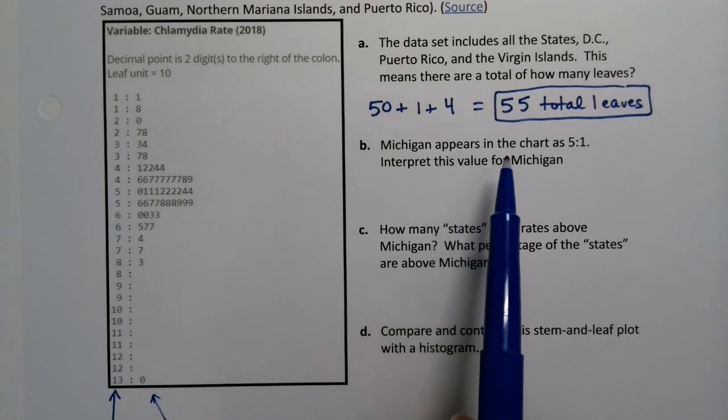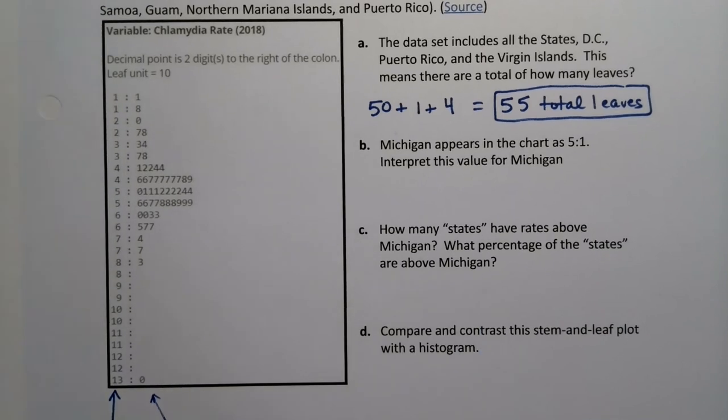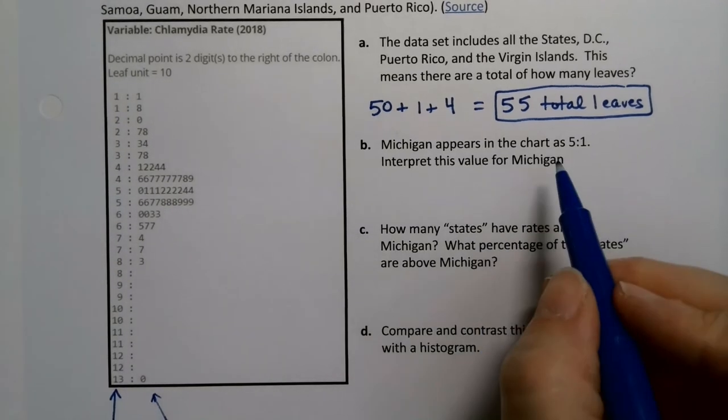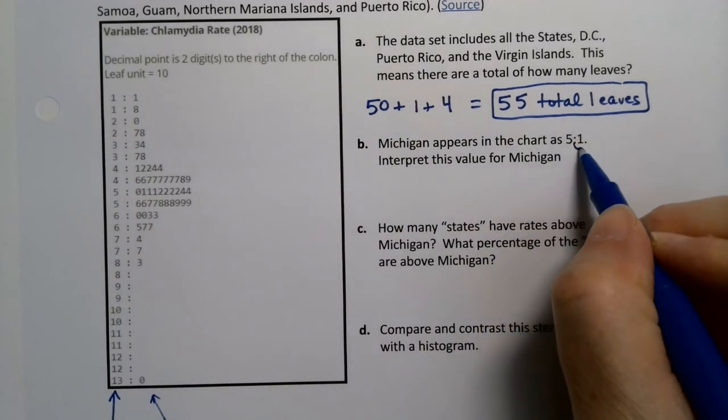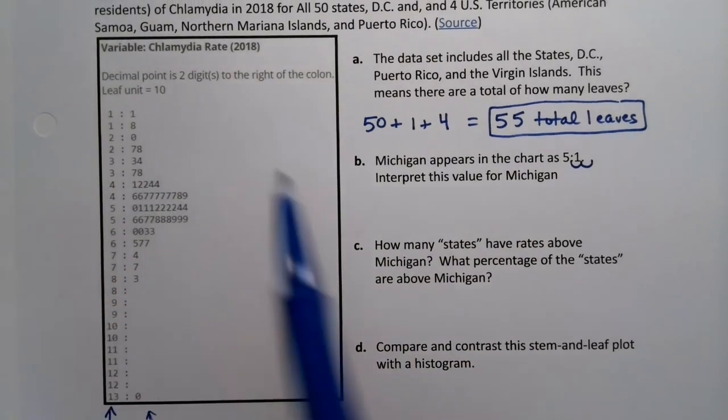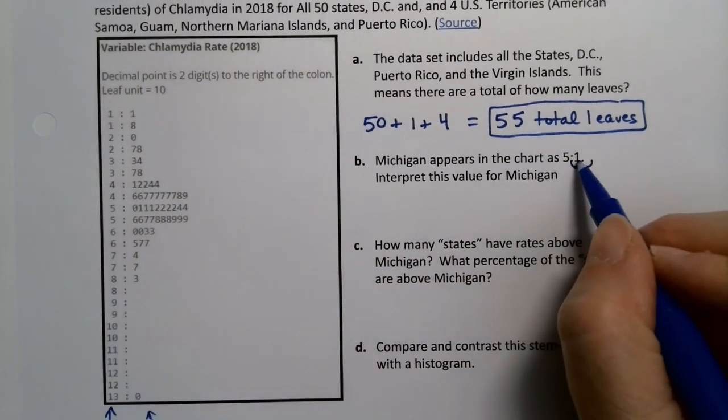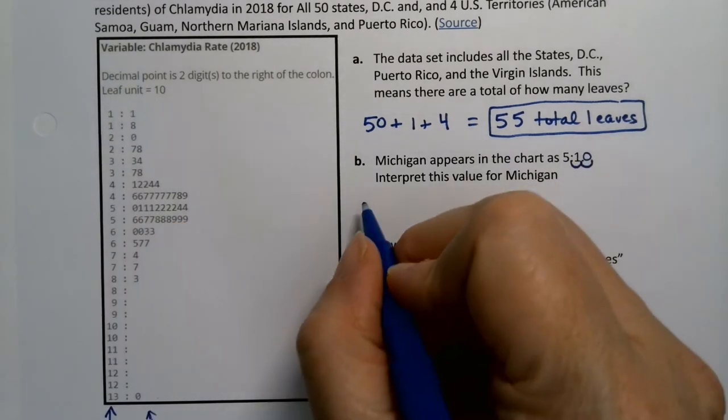Michigan appears in the chart as 5 colon 1. I thought it'd be interesting to see Michigan since that's the state where I'm based. Michigan is 5 colon 1. What does that mean? Well, remember it means the decimal is two spots over. It says decimal is two digits to the right of the colon, and then the leaf unit, which is a 1, is actually a 10. So it's 510.